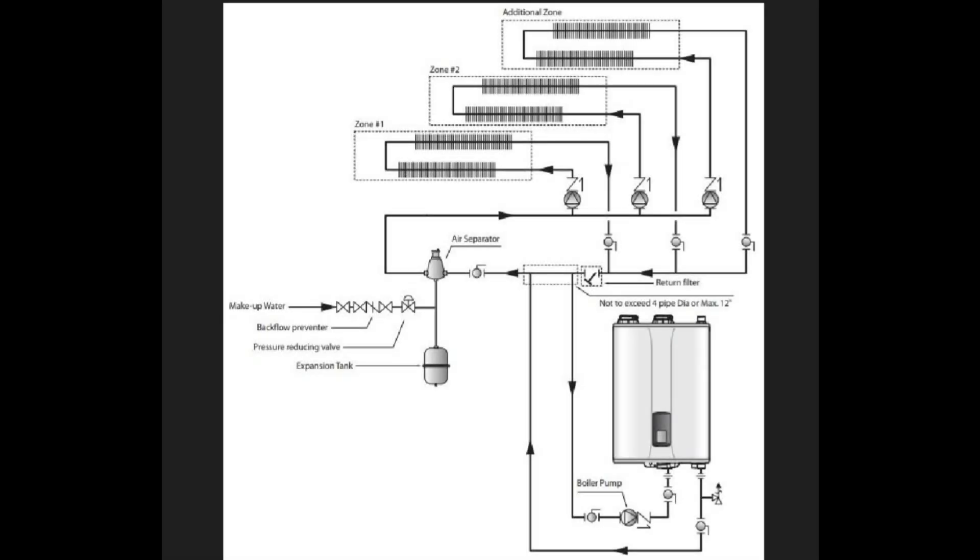Now, as for the rest of the piping on a combi boiler, it's very similar to your standard hydronic boiler. This is our closely spaced T's here, right? So we got our T here and our T here spaced closely together. Here we have our makeup water coming in. And it's going to go up into an air separator. So we're going to have an air scoop or a spiral vent or something.